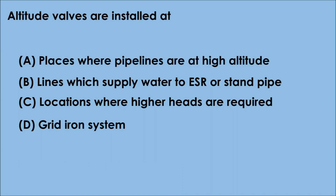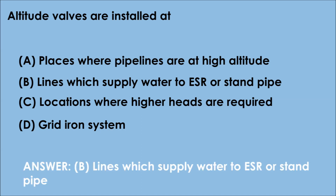Question 8. Altitude valves are installed at: A. Places where pipelines are at high altitude, B. Lines which supply water to ESR or stand pipe, C. Locations where higher heads are required, D. Gridiron system. The correct answer is option B — altitude valves are installed at lines which supply water to ESR or stand pipe.